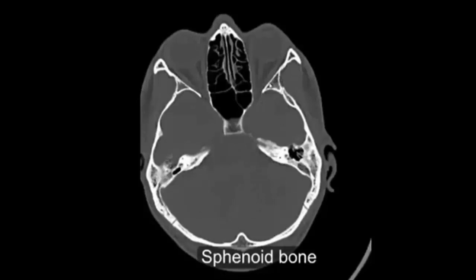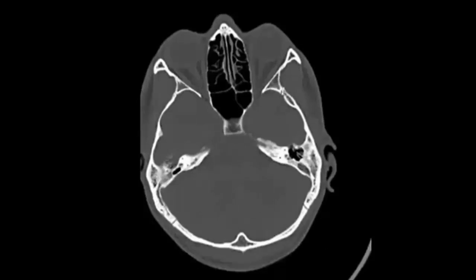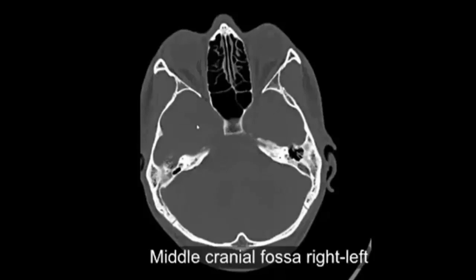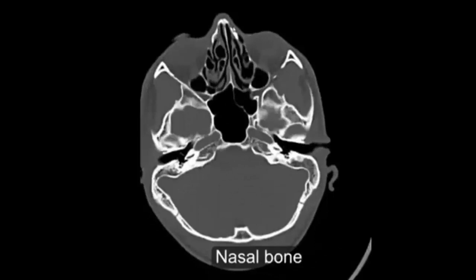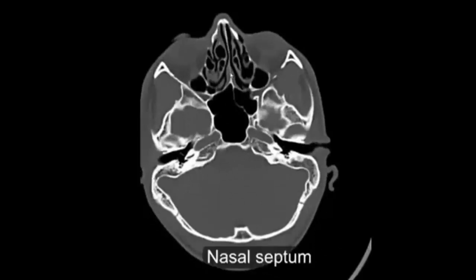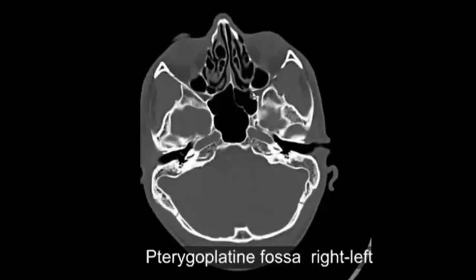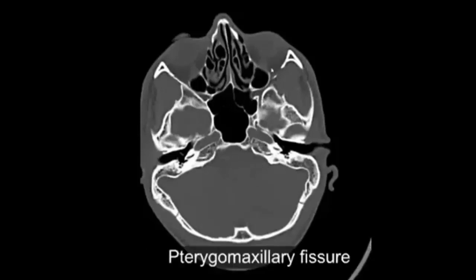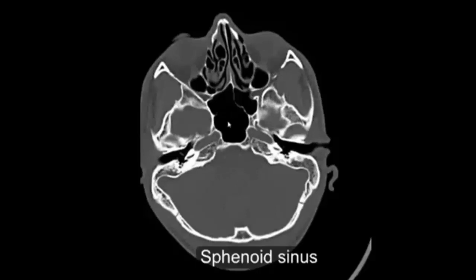Sphenoid bone, sphenoid squamous suture, middle cranial fossa, right and left nasal bone, nasal septum, ethmoid cell. Pterygopalatine fossa, right and left. Pterygomaxillary fissure. Foramen rotundum. Sphenoid sinus. Infratemporal fossa.